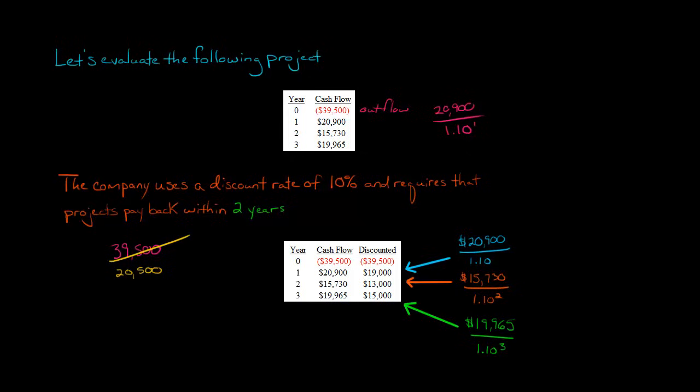Now, period, or year two, here we get $13,000. So now at that point, we get $13,000. There's $7,500 that is yet to be repaid.